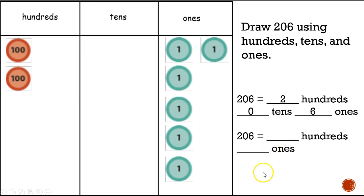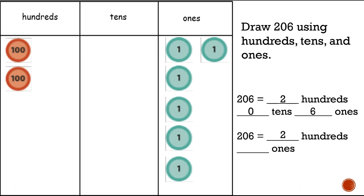Here's another tricky one. Two hundred and six equals how many hundreds and how many ones? They took out the tens here. Two hundred and six equals two hundreds and six ones.